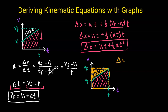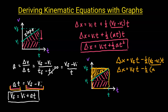The displacement equals the rectangle's height times base: VF times T, minus we subtract that triangle which is one-half times VF minus VI times time. Substituting VF minus VI with AT, we get VF·T minus one-half AT², and this is our third kinematic equation.